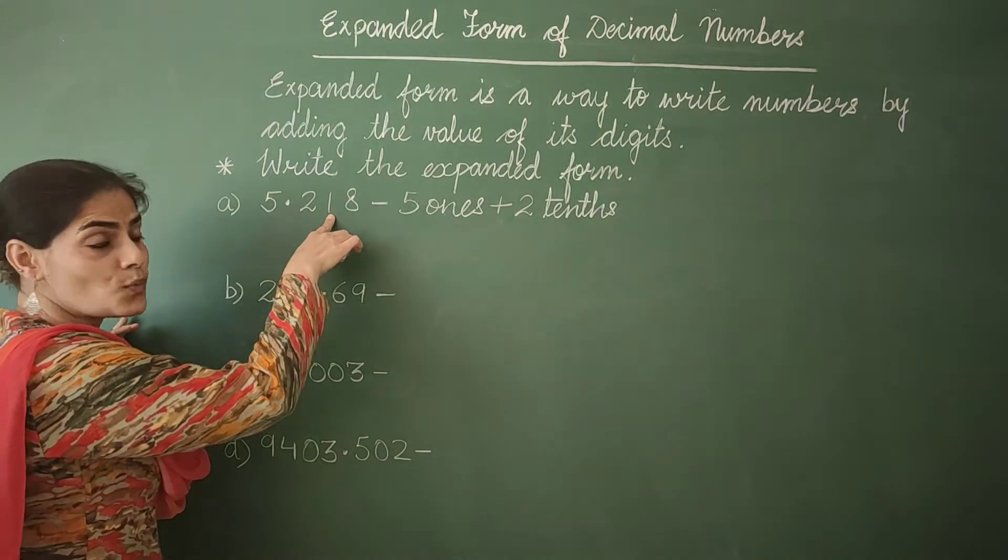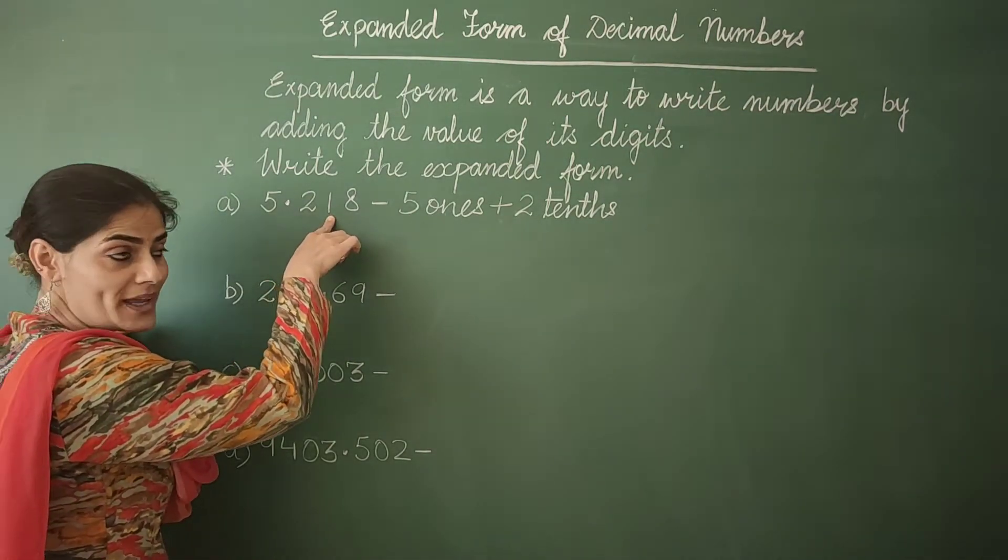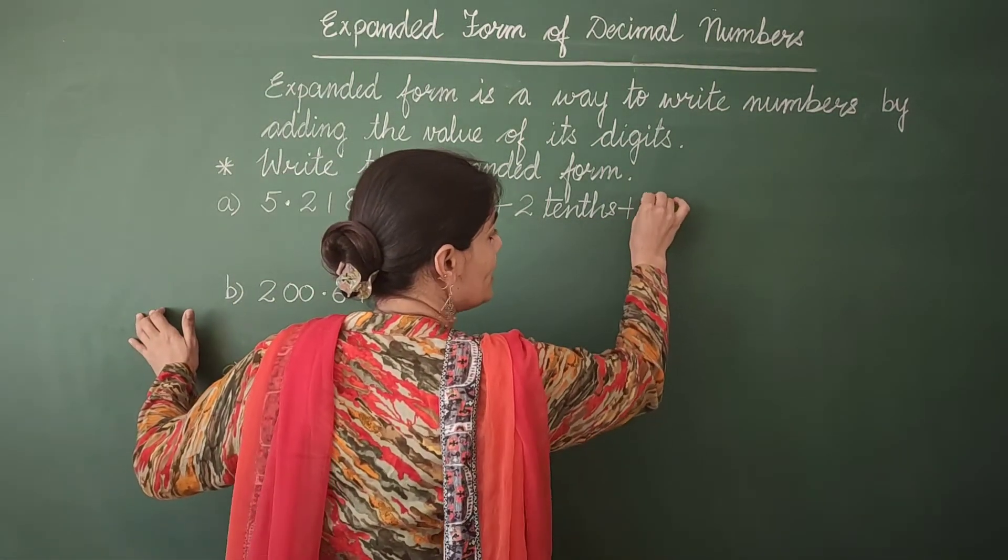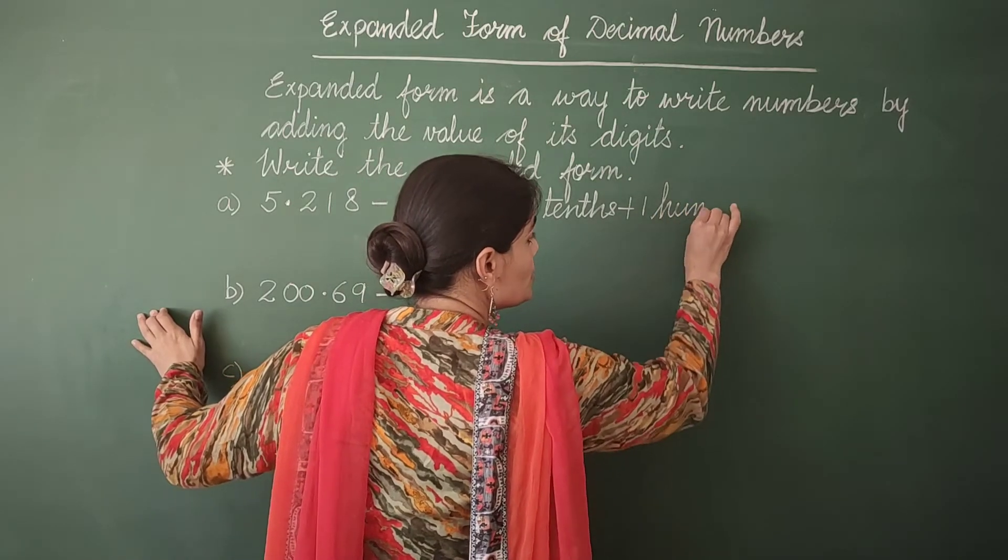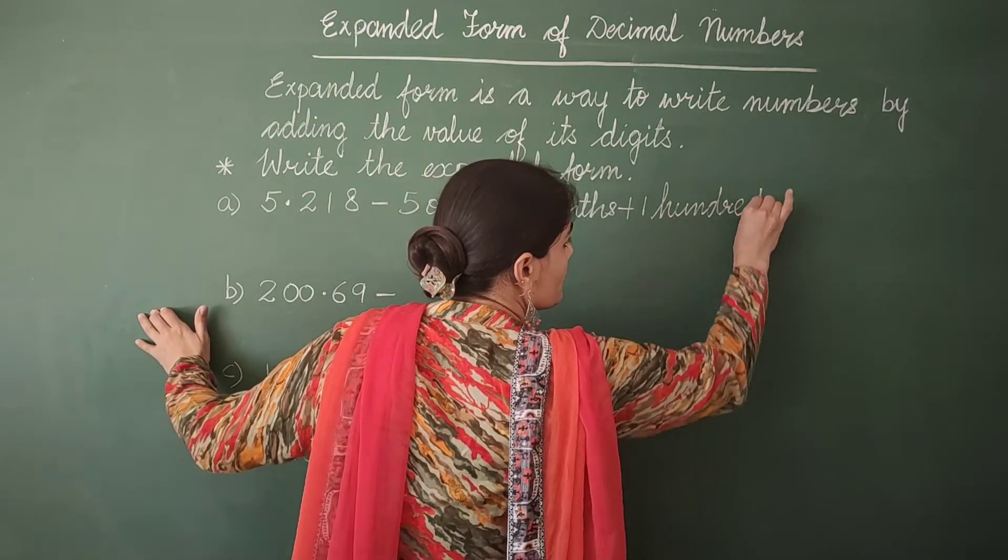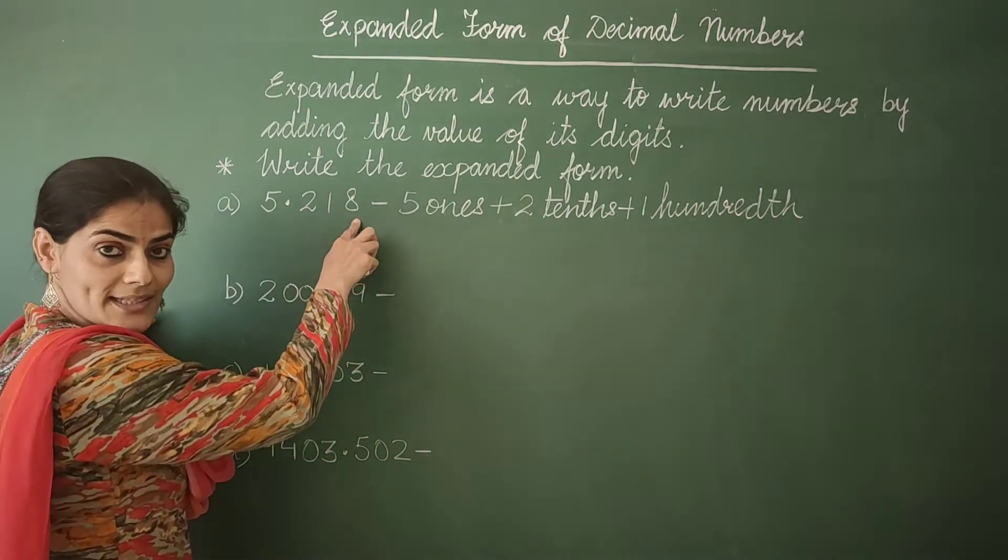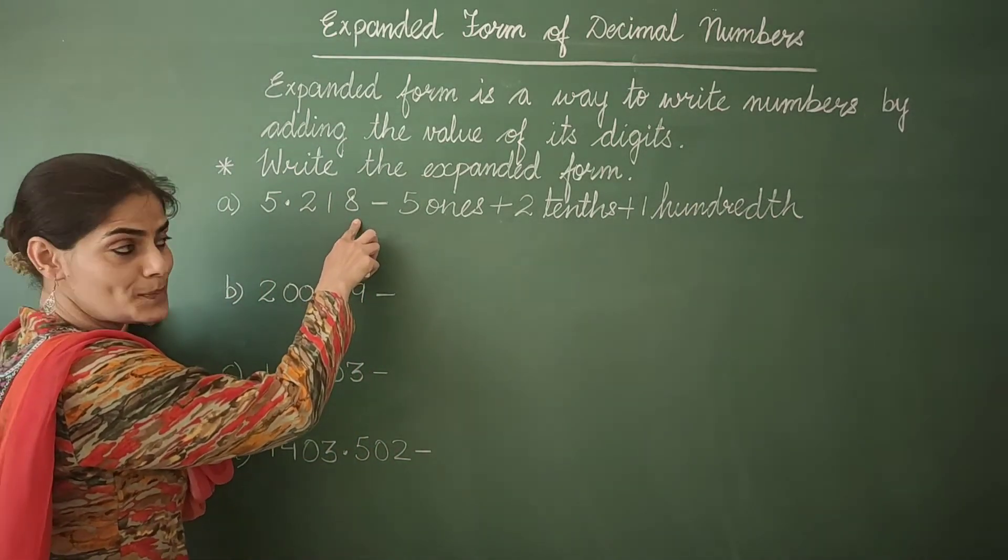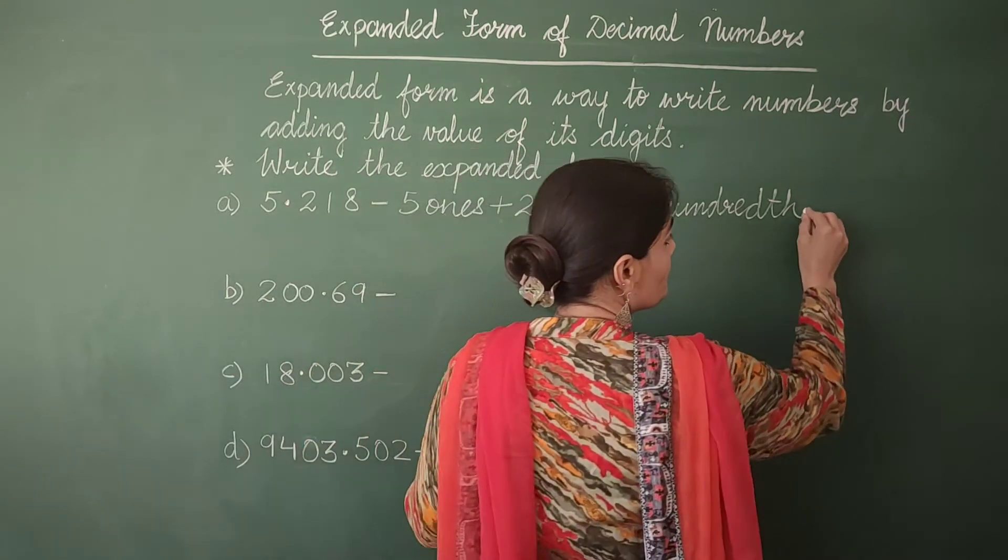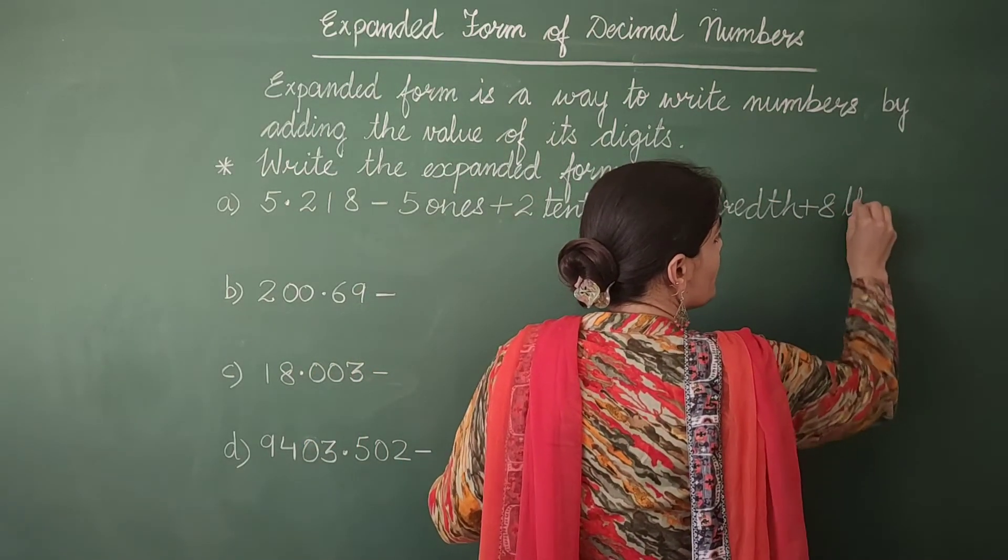Now this is 1. 1 is at hundredths place. So I write 1 hundredth. Now the next digit is 8. 8 is at thousandths place. So I write 8 thousandths.